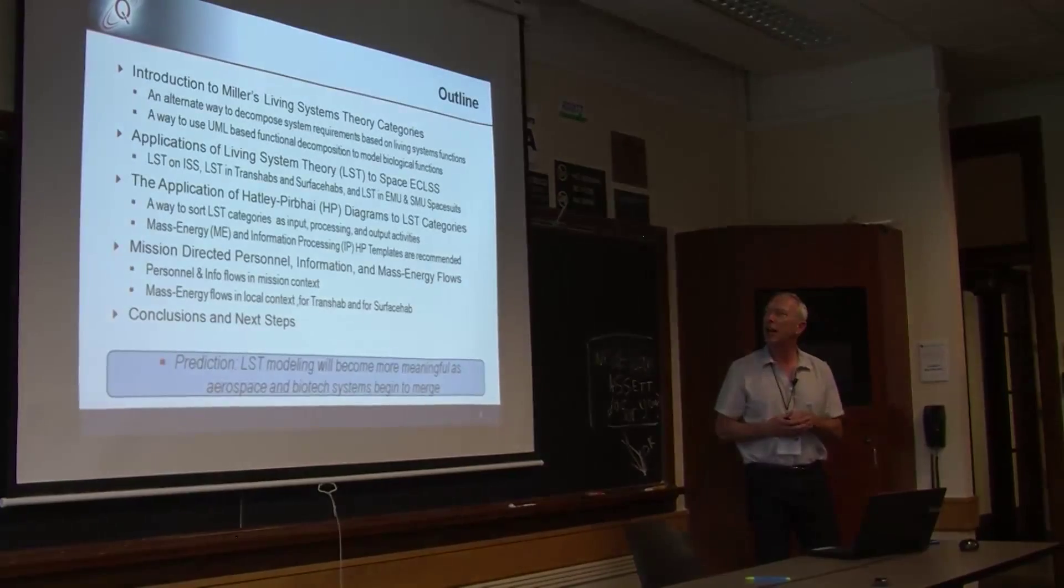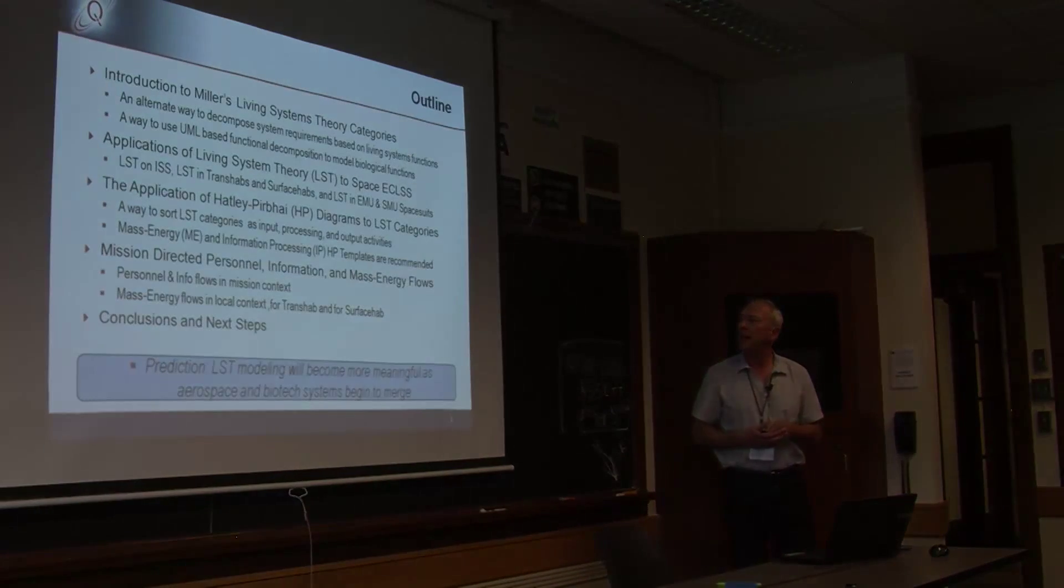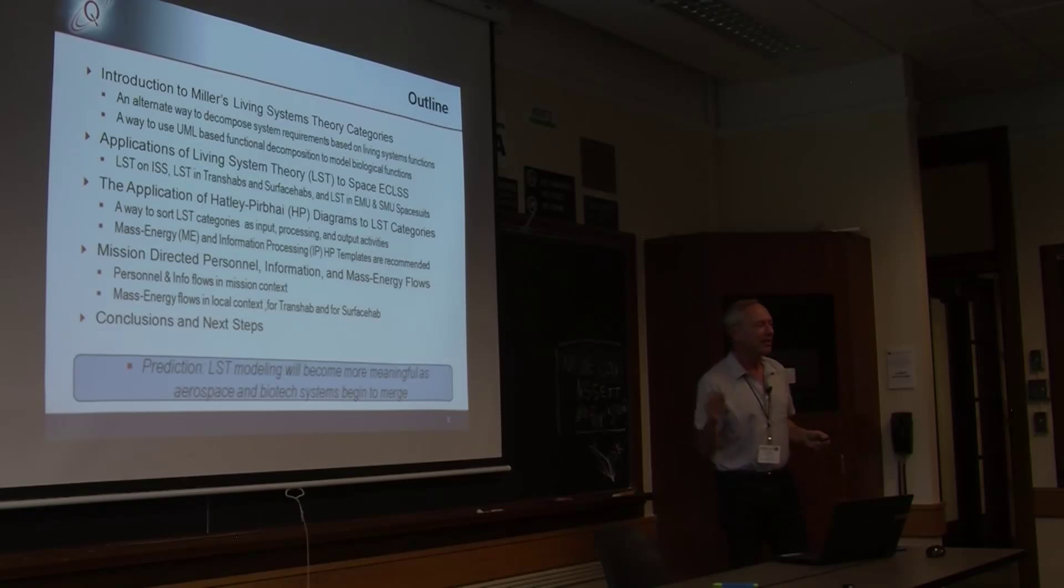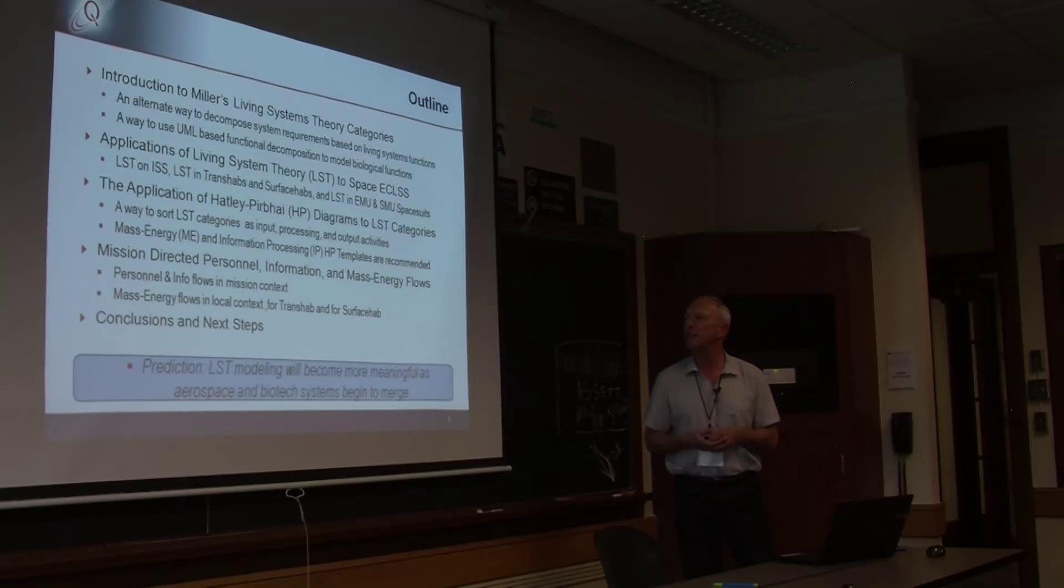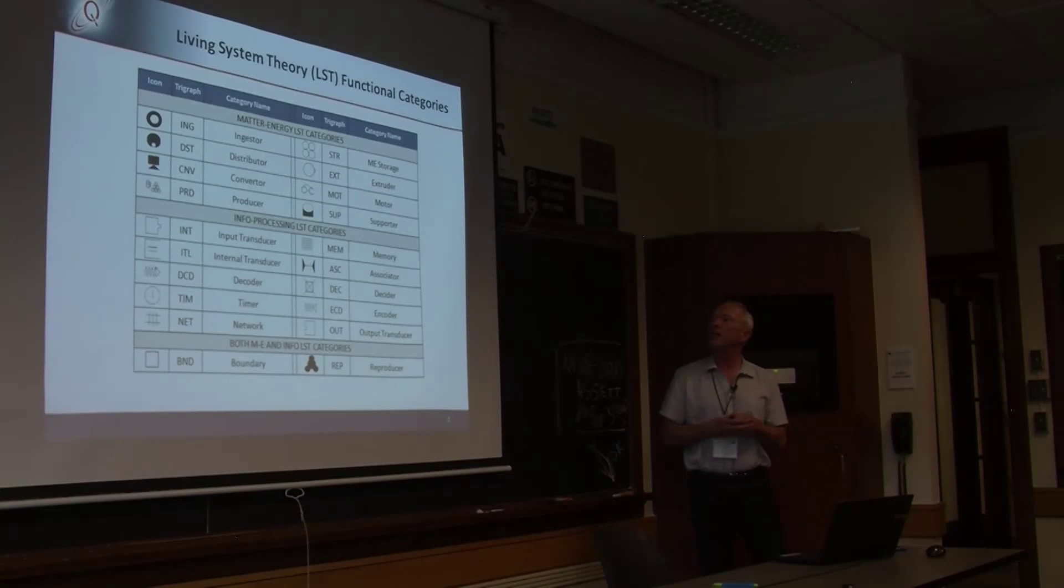So this talk is going to introduce James Miller's living systems theory categories for those of you who aren't biologists or not familiar with those categories. It's going to hit on how to apply these especially to life support systems and then apply some model-based system engineering tools to those living system categories to try to represent it. So it's time for something completely different. Why is this put in the philosophy section? You'd have to ask the organizers that question but certainly model-based system engineering is a philosophy that purports to represent systems using functional analysis.